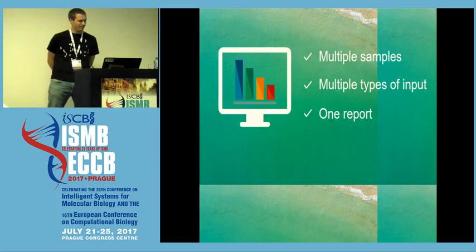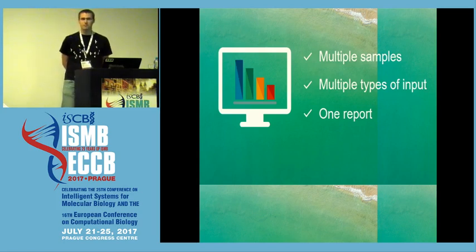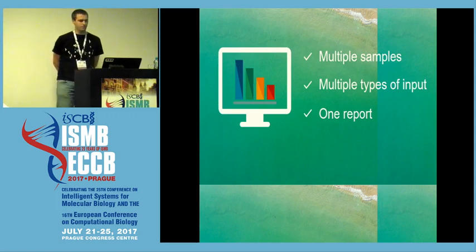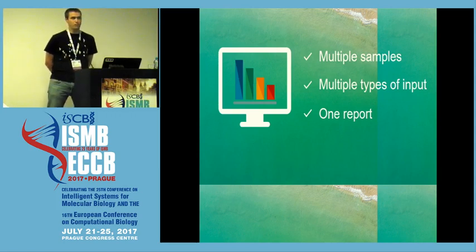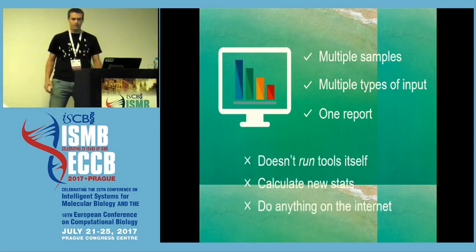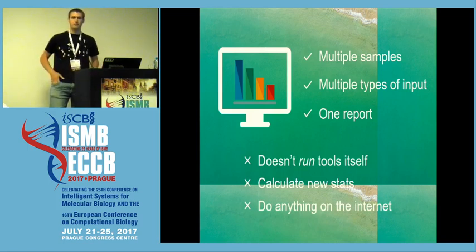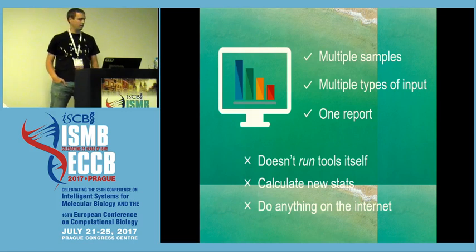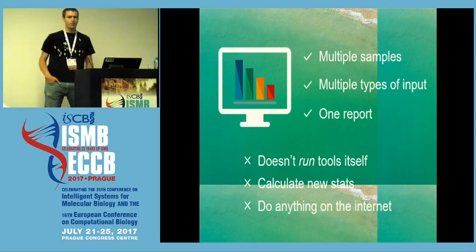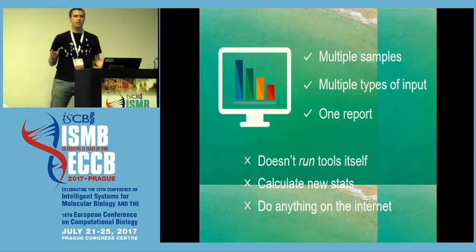MultiQC is designed to handle and generate reports for multiple samples and from multiple types of inputs. So if you run your analysis pipeline through a bunch of different tools, it will pull all of those together for your whole project and give you one single report where you can get an overview of the whole process. It's worth pointing out that MultiQC doesn't actually run any of these tools itself — you still have to do your normal analysis pipeline. On the whole, it doesn't calculate any new statistics; it pulls in summary stats from other tools which are already generated. And although it generates an HTML report, it can work completely offline without any external dependencies.